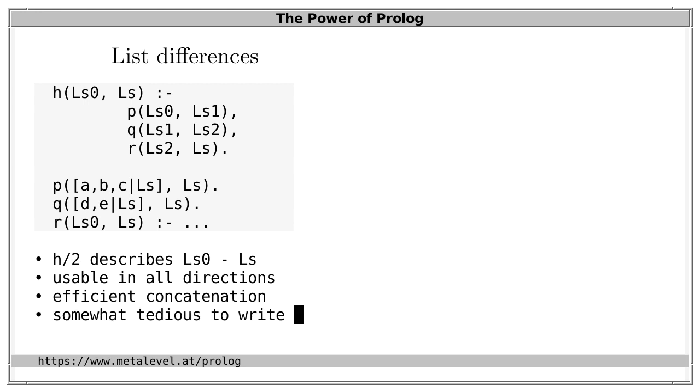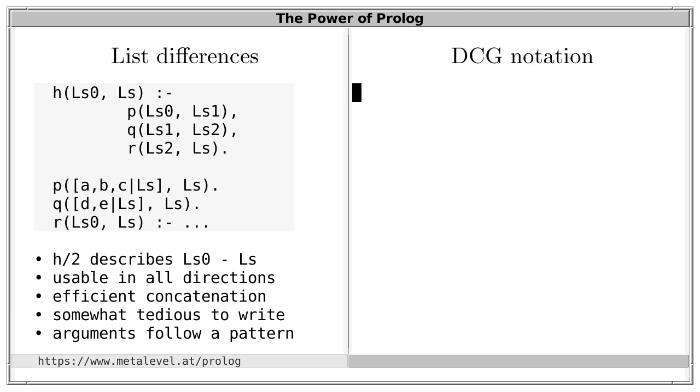Speaking of convenience, this is certainly somewhat tedious to write due to all these arguments that must be passed around. However, luckily, the arguments follow a very specific pattern and Prolog therefore provides a built-in formalism that lets us shorten this. This formalism is called definite clause grammars, or DCG notation, and we will consider it separately on another occasion.